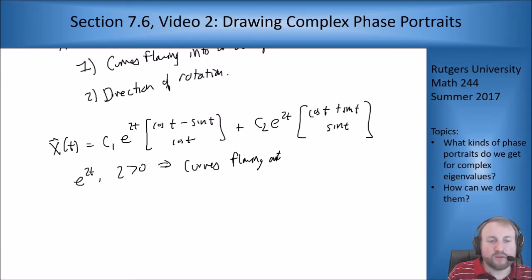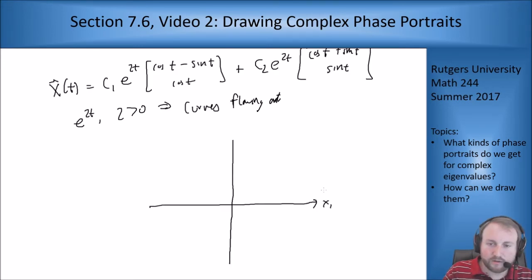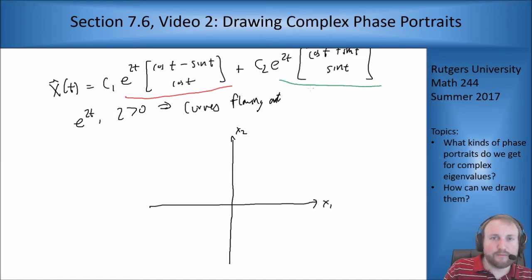Now in terms of direction, the way to do this is just start drawing curves and see what you get. So let's start drawing a picture. Here's going to be x1, here's going to be x2. So what I want to do is draw these two curves - this one here in red and this one here in green. I'm going to draw these two and use that as a basis to see what's going on.